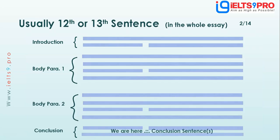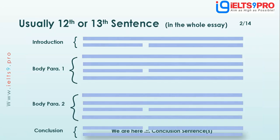You state whether you agree or disagree, or what the advantages are, etc. You summarize your main points and add one final thought. So you can see where we are now: two sentences for the introduction, body paragraphs one and two with four sentences each, and two or maybe three for the conclusion.